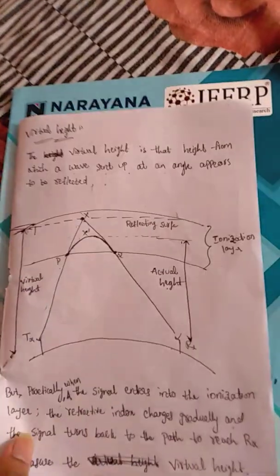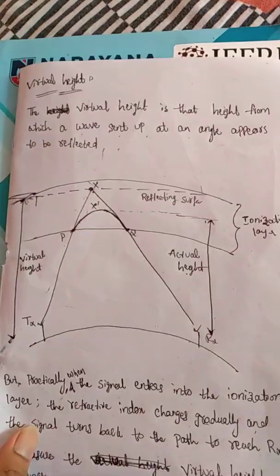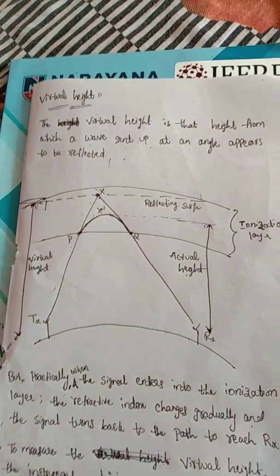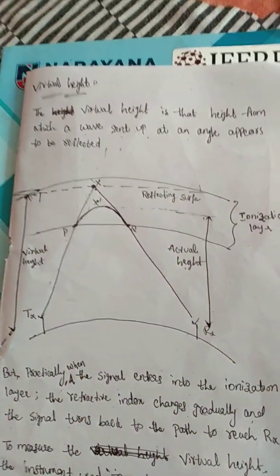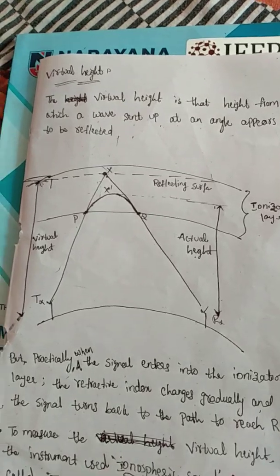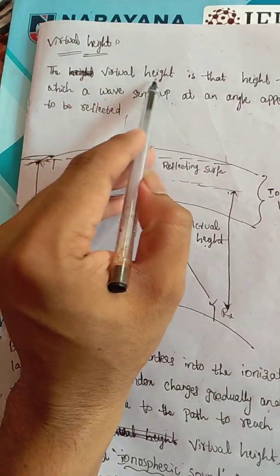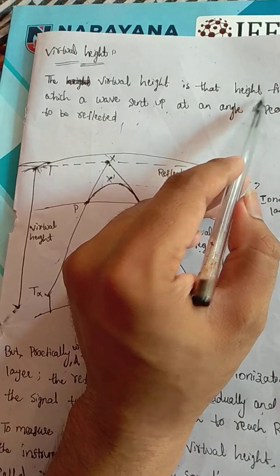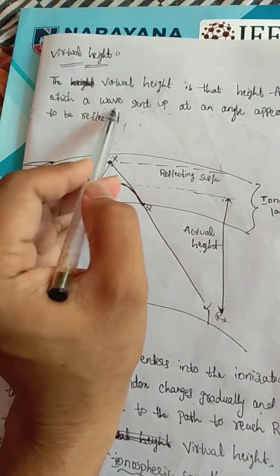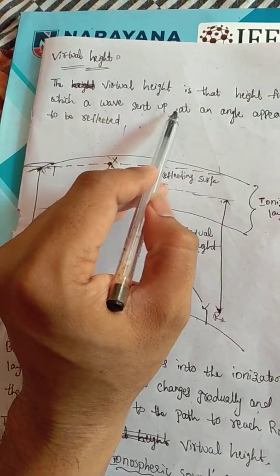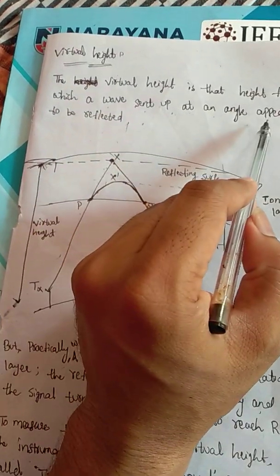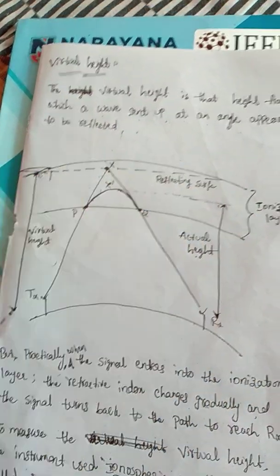Virtual height is the height from which a wave sent up at an angle appears to be reflected. Let me explain this with a diagram.